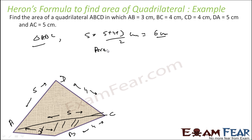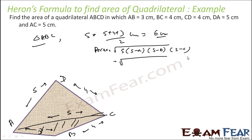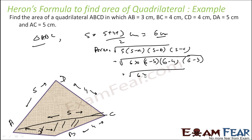The area of triangle ABC is root of S(S minus A)(S minus B)(S minus C) — that is root of 6 times (6 minus 5) times (6 minus 4) times (6 minus 3) — which equals root of 6 times 1 times 2 times 3, that is 6 centimetre square.